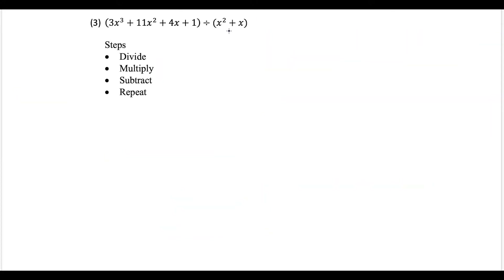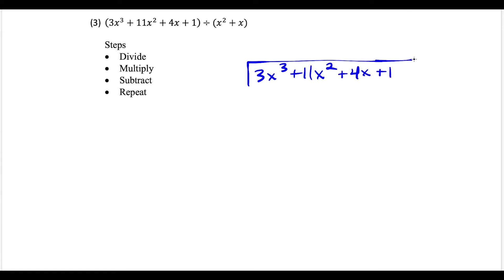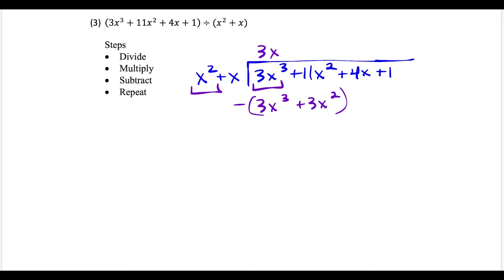Now let's look at examples where we divide by nonlinear factors, like x squared plus x. We write 3x to the third plus 11x squared plus 4x plus 1 inside, and x squared plus x on the outside. Looking at the leading terms, 3x to the third over x squared makes 3x. Now multiply: 3x to the third and plus 3x squared. Subtracting by changing to addition and flipping signs — these cancel, and 11 plus negative 3 gives 8x squared. Bring down the 4x.